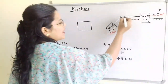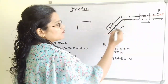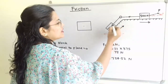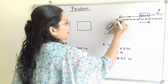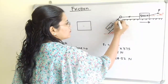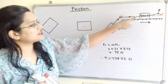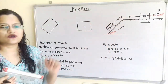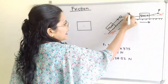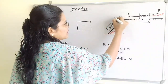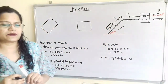The tension we have to show always in the outward direction from the block. For the 500 N block, this is the outward direction, and for the 750 N block also we have to show the outward direction. Since it is the same string connected through a pulley, the magnitude is the same but the direction is opposite. So we show tension T.